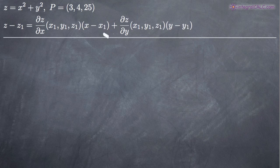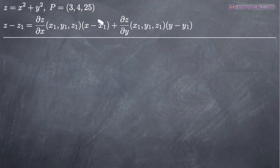I've gone ahead and written out the formula for the equation of the tangent plane. It looks more complicated than it is. Basically, we only need a couple pieces of information. First of all, we've already been given the point at which we're supposed to find the tangent plane: (3, 4, 25). Those values are going to go in for x sub 1, y sub 1, and z sub 1, respectively.